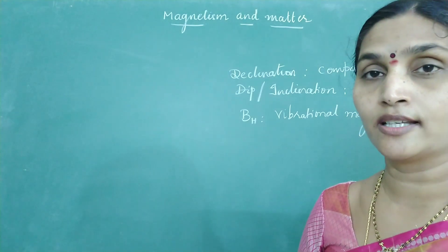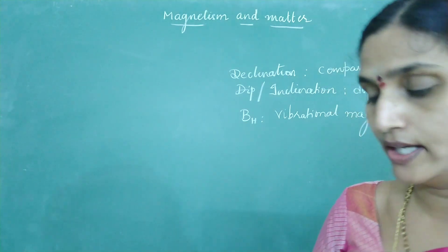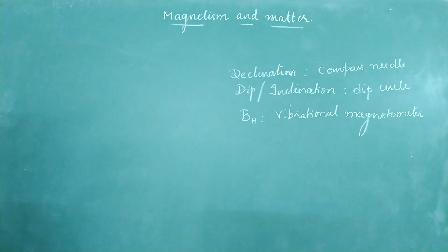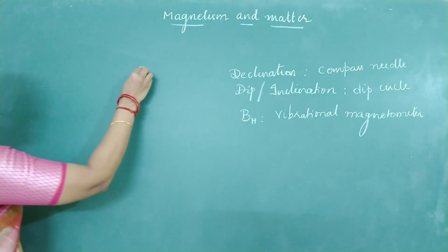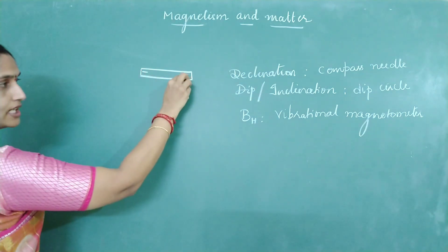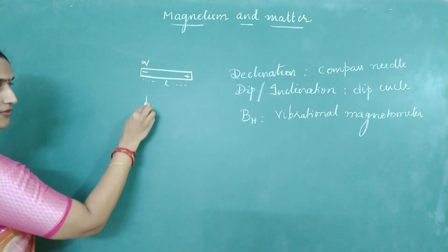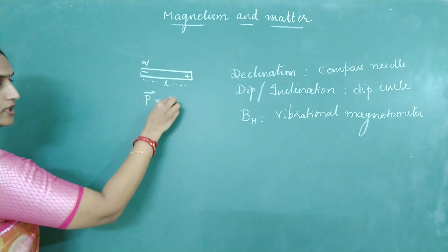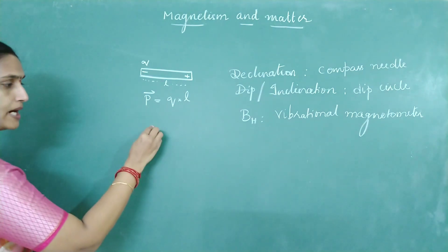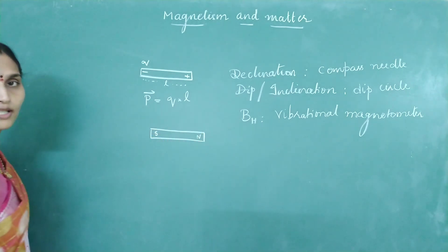To understand the vibrational magnetometer, first we will go back to the study of a bar magnet and see how we define magnetic moment. If you consider an electric dipole, we know a magnet is a magnetic dipole. For an electric dipole, if you have negative and positive charges separated by a finite distance, the dipole moment is the product of charge into distance between the charges. So exactly similar to this, for a bar magnet, it has two poles, north and south, separated by a finite distance.